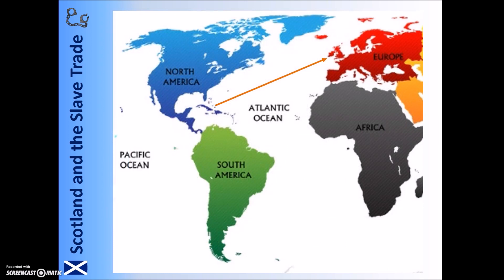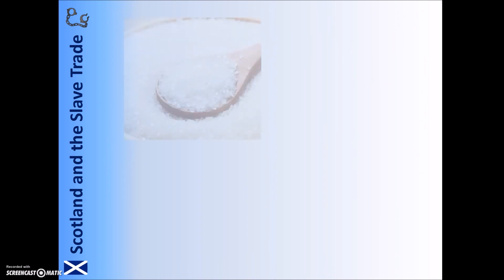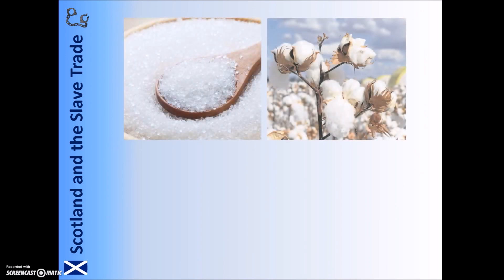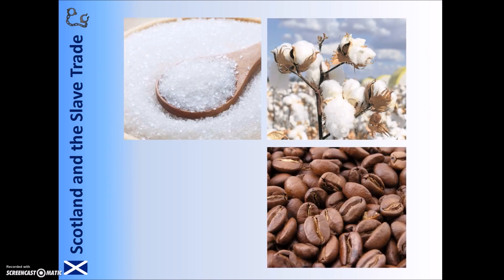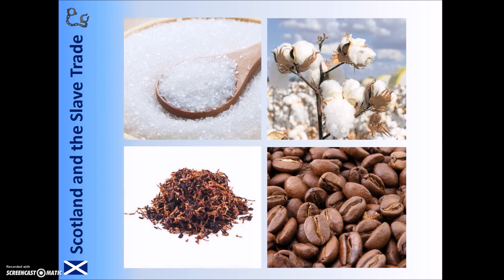The final stage of the triangular trade saw the goods produced by the slaves transported back to Europe to be sold, before the whole process started again. Slave products that were sold in Europe included sugar, cotton, coffee, and also tobacco.